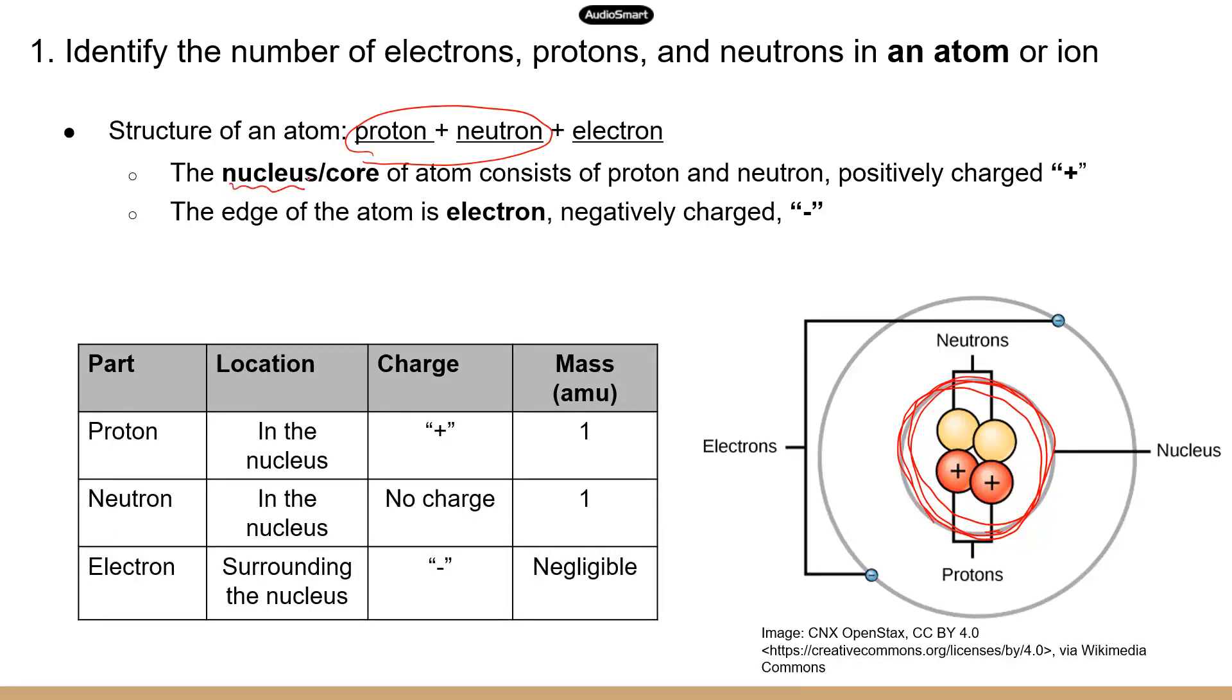Now, the nucleus of an atom is different than the nucleus of a cell, right? So the nucleus, again, for an atom is just kind of the center of the atom. Now, these two subatomic particles have different properties. Protons are positively charged. And neutrons, based on the name, no charge, right? Electrically neutral, no charge. And surrounding the nucleus, you have electrons that are flying in high speed. Now, electrons are negatively charged.